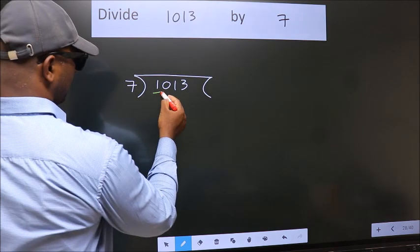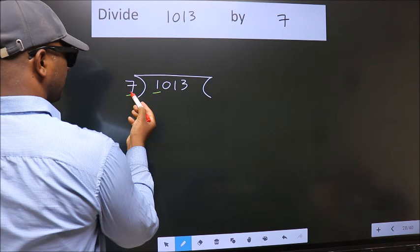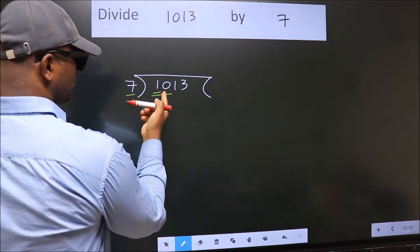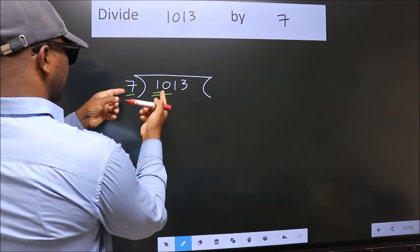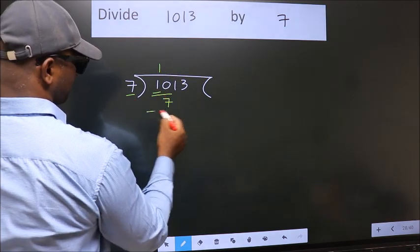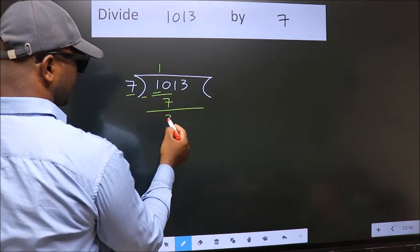Here we have 1. Here 7. 1 is smaller than 7, so we should take 2 numbers: 10. A number close to 10 in the 7 table is 7 once, 7. Now we should subtract. We get 3.